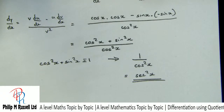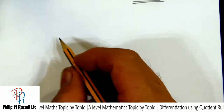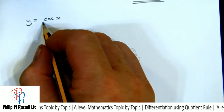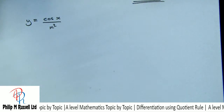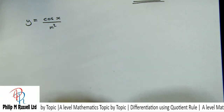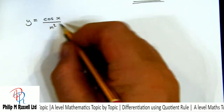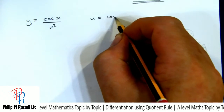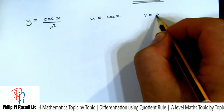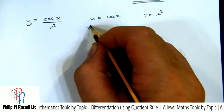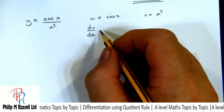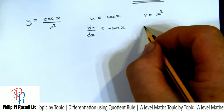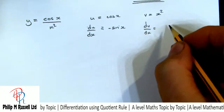Let's combine ideas and do another one. Take y = cos x over x². I'm keeping things nice and simple. Setting u = cos x and v = x², then differentiating: du/dx equals minus sin x, and dv/dx equals 2x.